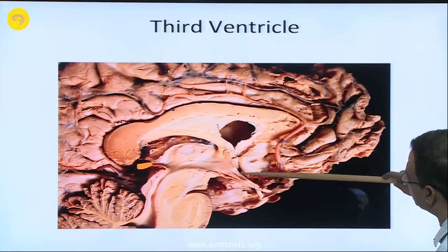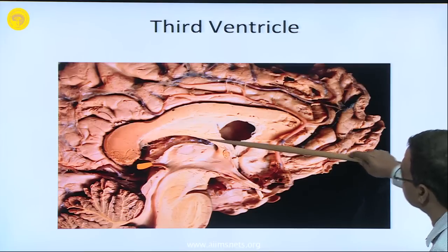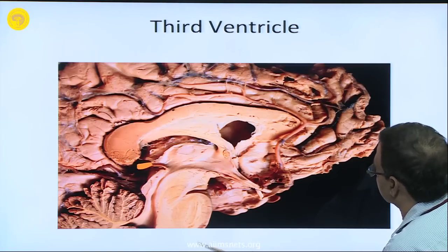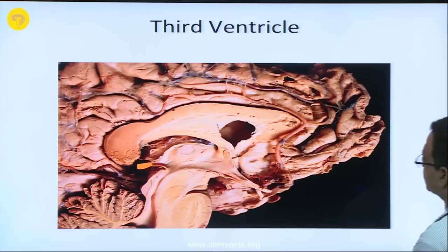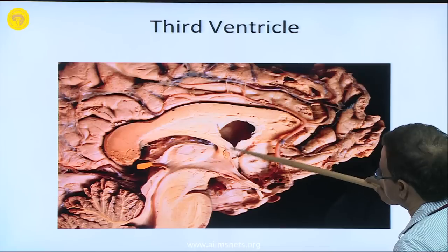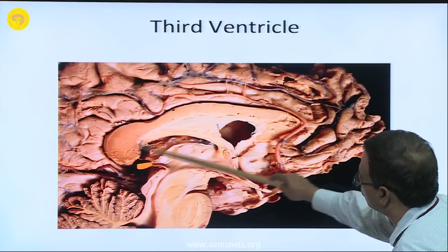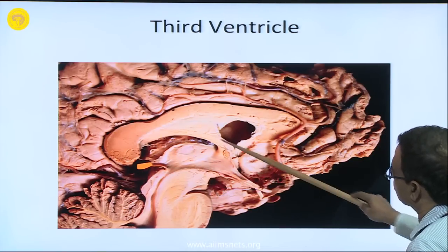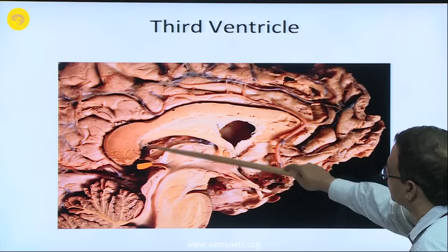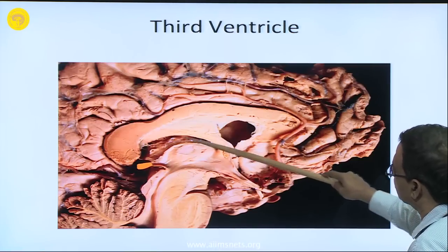Here is the optic chiasma, the lamina terminalis, the anterior commissure, and the fornix. The whole of the lateral ventricle forms like a C. The fornix, along with the lateral ventricle, initially develops in the lamina terminalis but when the brain grows, along with the ventricles, it grows towards the temporal horn also. It is also C-shaped, like the caudate nucleus and the lateral ventricle.